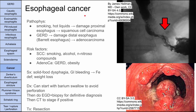Next is esophageal cancer. There are two major types: squamous cell carcinoma and adenocarcinoma. Squamous cell carcinoma typically occurs in the upper third of the esophagus and can be precipitated by smoking and drinking hot liquids like hot coffee, which damages the proximal esophagus. Adenocarcinoma usually occurs in the bottom third of the esophagus, caused by chronic GERD continually damaging the distal esophagus. Barrett's esophagus — when squamous epithelium changes to columnar epithelium — can progress to adenocarcinoma.